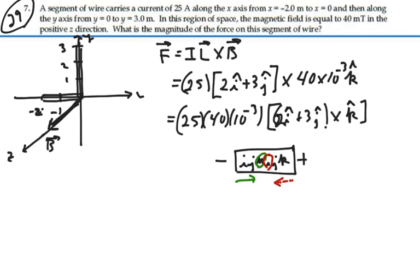All right, so in this particular case, what are we going to get? We've got 25 times 40 times 10 to the minus 3, which is 1. And then I have i cross k. So looking at my device, i cross k should give me a negative j.